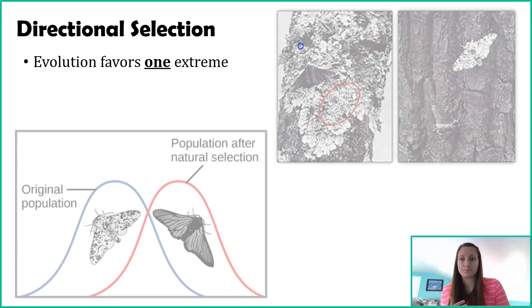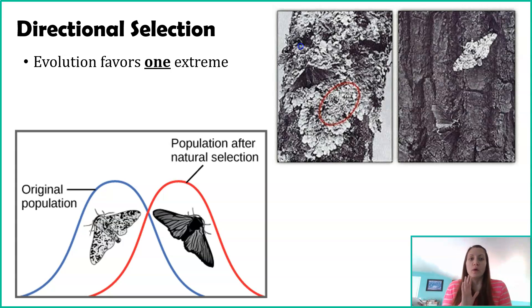The next one we'll talk about is directional selection, and this is where evolution is favoring one of the extremes. I'm going to give you an example of the peppered moth. The peppered moth has variation in the color of their wings. That color is hereditary, so it passes to the next generation. The peppered moth is an example of natural selection.